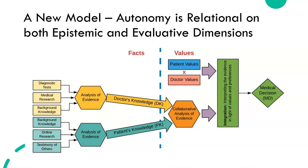So we get a new model once we've reflected on the way patients know — a new model in which autonomy is relational on both the epistemic and evaluative dimensions. That means patients' values get tested against the doctor's values, and both the patient and doctor are gathering information. The doctor gathers evidence from diagnostic tests, medical research, and their own background knowledge, while patients gather information from their own background knowledge, online research, and the testimony of others from all those sources we've discussed. They need to collaboratively analyze that information and feed it into the medical decision. That's how patients know, according to Kukla's account. Thanks, and I'll see you next time.